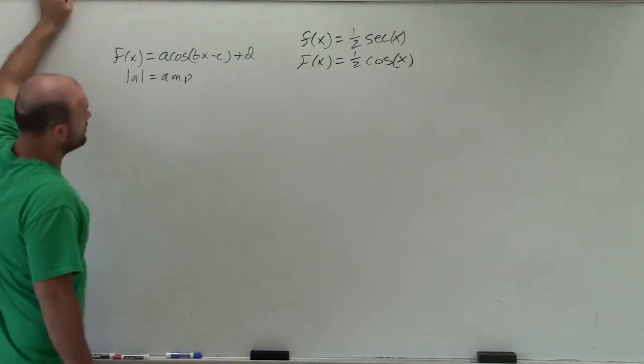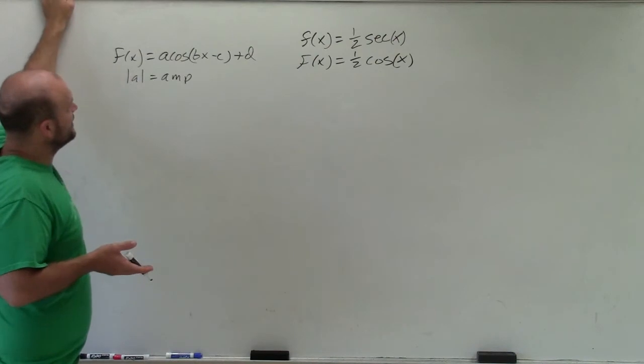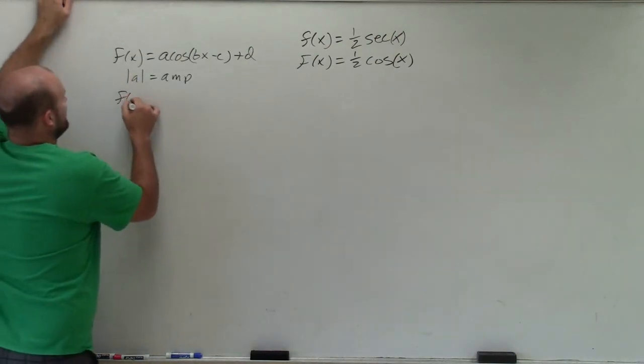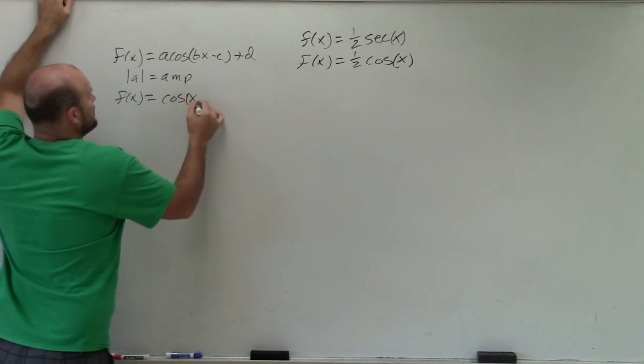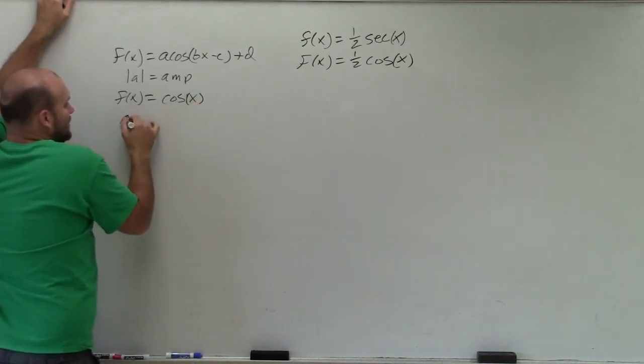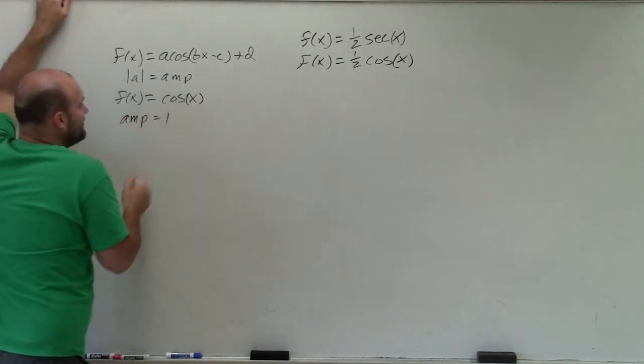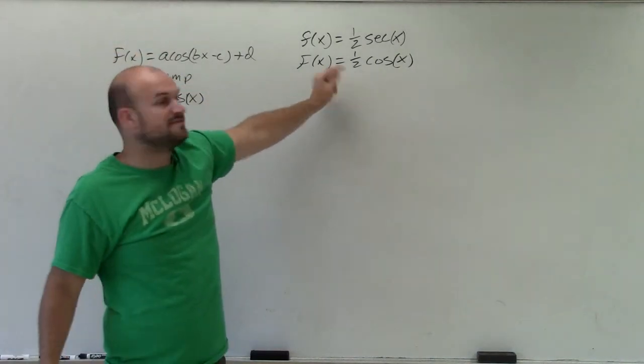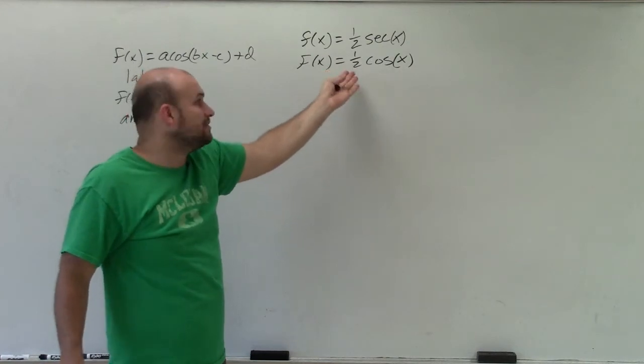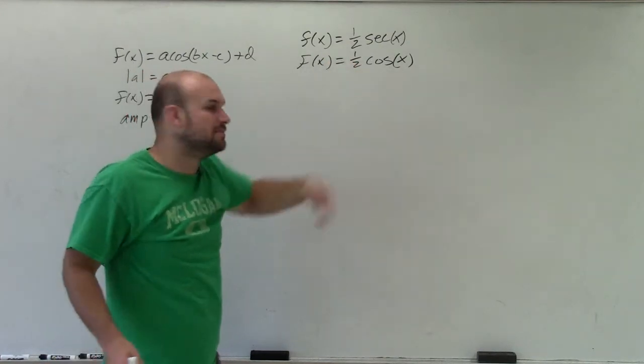So when we look at the general function, the parent graph f(x) = cos(x), this has an amplitude of 1. That means the graph goes up 1 and has a maximum of 1 and a minimum of -1. So now you can look at this graph and say, oh well, this graph is only going to have a maximum of 1/2 and a minimum of -1/2.